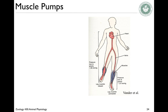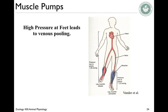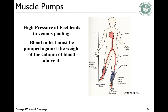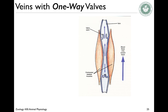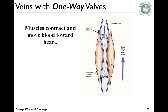Now about the venous system: it is a site of blood storage. How do we get blood back up to the heart? Muscle pumps. There is high pressure at the feet that leads to venous pooling — anyone with elderly people in their family knows this can be a huge problem. The blood in the feet has to be pumped up against gravity and against the weight of the column of blood above it. One ingenious design is to have leg muscles acting as pumps, which is allowed because veins have valves to prevent backflow. Muscles contract and push the blood toward the heart, and the valves close behind, only opening in the direction of the heart. As the muscle squeezes, it pushes blood in the right direction, and the one-way valves prevent backward flow.